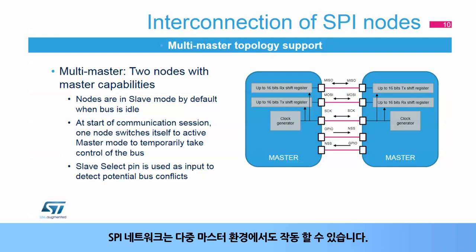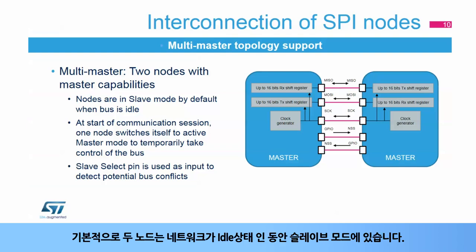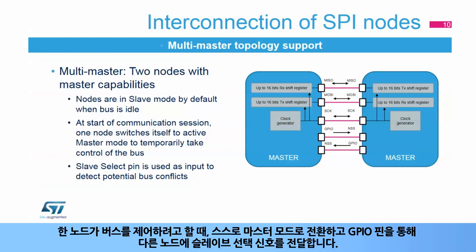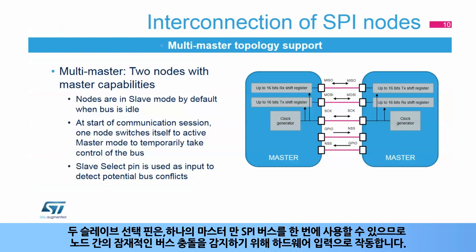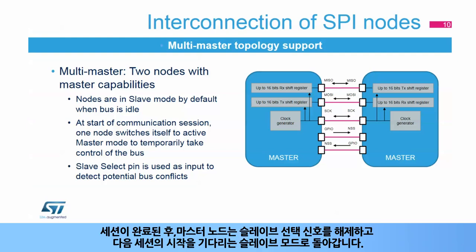An SPI network can also operate in a multi-master environment. This mode is used to connect together two master nodes exclusively. By default, both nodes are in slave mode as long as the network is idle. When one node wants to take control of the bus, it switches itself into master mode and asserts the slave select signal on the other node through a GPIO pin. Both slave select pins work as a hardware input to detect potential bus collisions between nodes, as only one master can use the SPI bus at a single time. After the session is completed, the master node releases the slave select signal and returns to passive slave mode, waiting for the start of the next session.